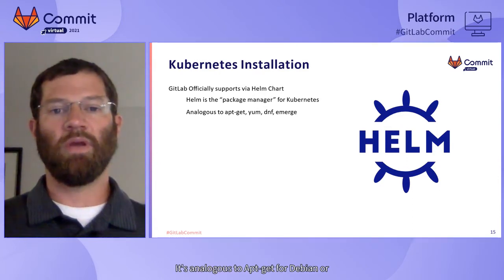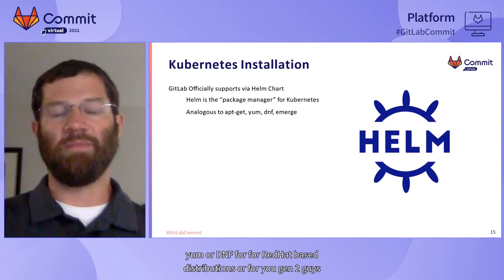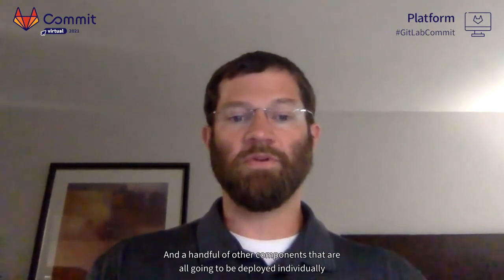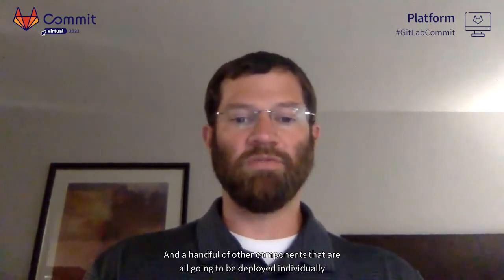It's analogous to apt-get for Debian, or Yum/DNF for Red Hat-based distributions. GitLab, for example, has the application itself, a Postgres database, MinIO object storage, and a handful of other components that are all going to be deployed individually to make GitLab work on Kubernetes. Helm helps you manage all of these different components together.